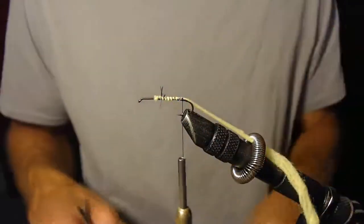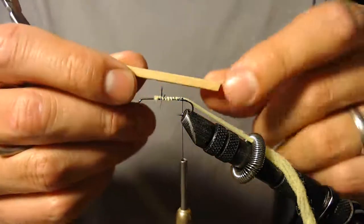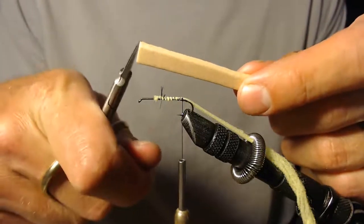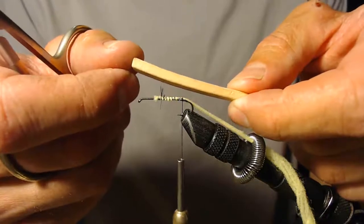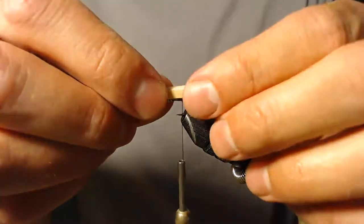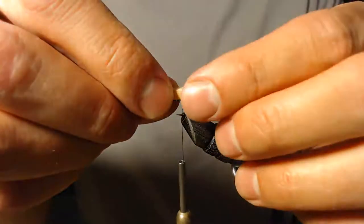Alright, now the next step is I'm going to get some tan foam. I cut this tan foam about a quarter inch wide, and this is 5 millimeter foam, pretty thick stuff really. I'm going to take this tan foam and tie it in sticking back a little bit at the back of the hook.